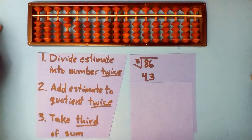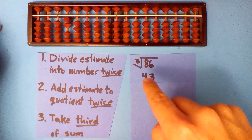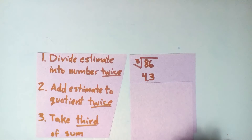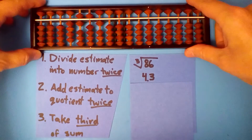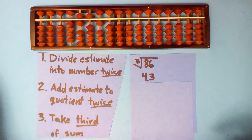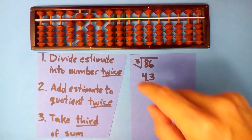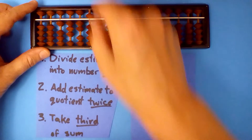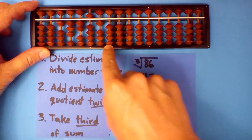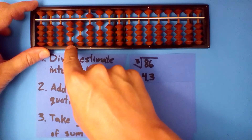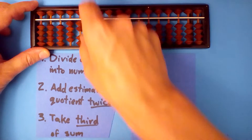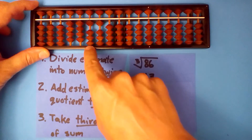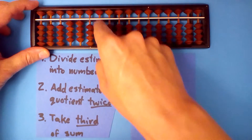You should get 20 as your quotient. Now do it again — we need to do it twice. Divide 4.3 into 20. You should get 4.651 as your quotient. Next, add 4.3 twice and divide by 3. A third of 1 is 0, a third of 13 is 4, a third of 12 is 4, a third of 5 is 1. This is our first time through so we only need two digits.